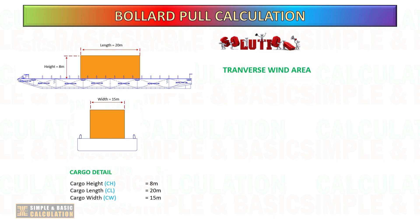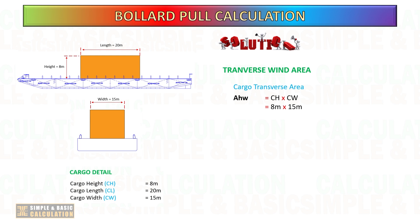Next, calculate the area of the cargo that is directly exposed to the wind. The wind direction is assumed to be in the transverse direction. In some cases, you can also include the longitudinal area of the cargo in the calculation, particularly if your cargo is large and the exposure to the wind is higher.